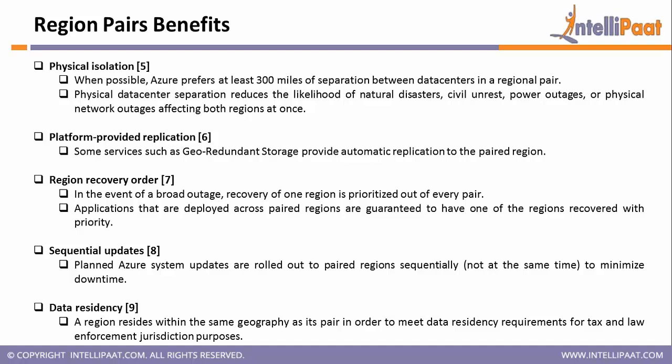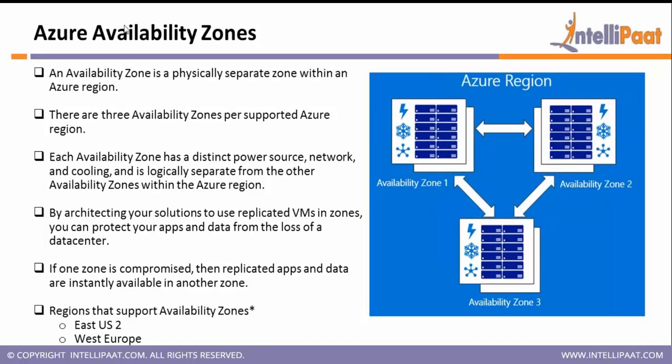With respect to data residency, a region pair resides within the same geography with respect to tax and law enforcement requirements, so your data may remain within India. If you don't want your data to go out of India — like the Aadhaar example — your data stays in India: one data center in Mumbai, another in Chennai. Your data remains in the same region and is not crossing the boundary. You also get high availability — if one goes down, you access from the second region. This is the region pair benefit.